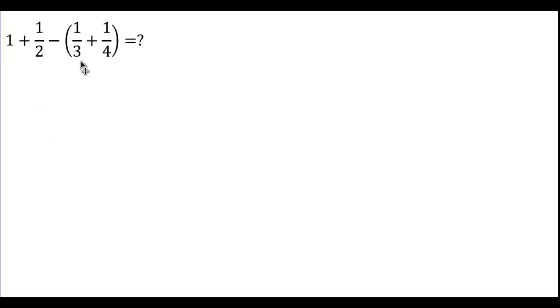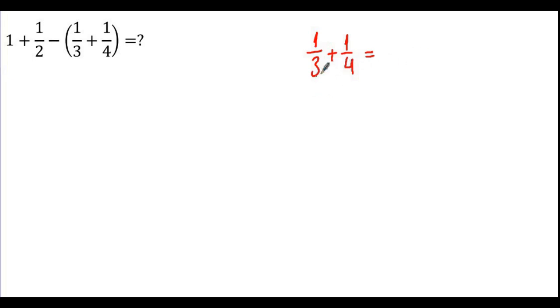Let's start with this example. We have a bracket here, so the first thing we have to do is the bracket: 1/3 plus 1/4. I have to make the denominators equal, so I have to find the LCM of 3 and 4. The LCM of 3 and 4 is equal to 12.